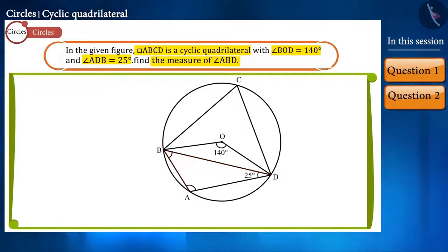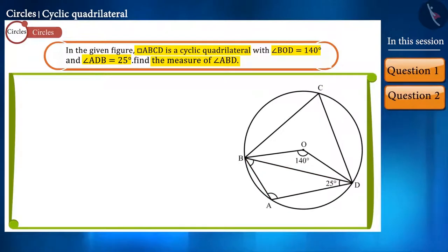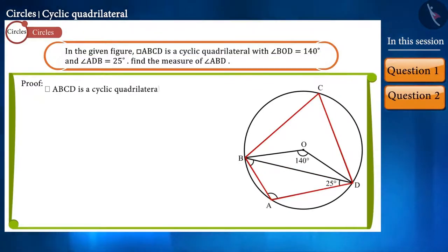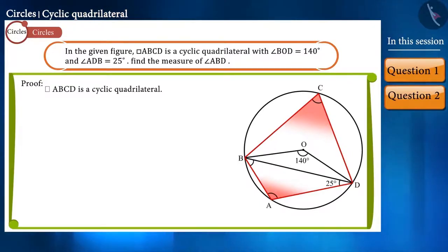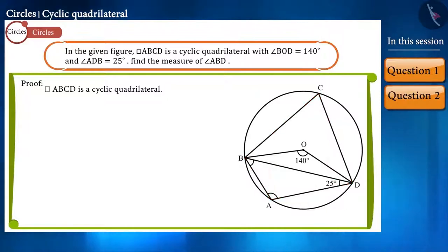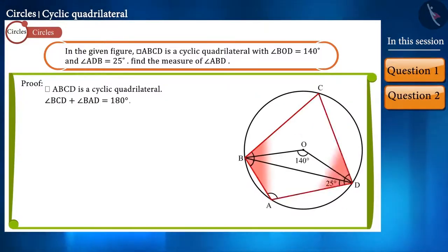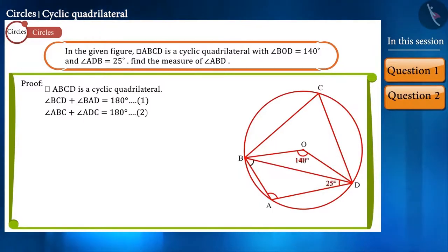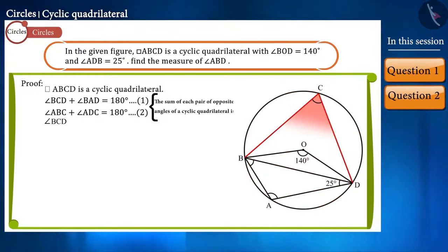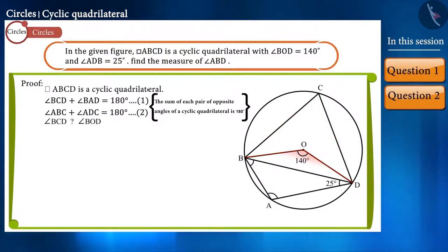Let us first see what is given. ABCD is a cyclic quadrilateral, so the sum of each pair of opposite angles is 180 degrees. By this property we get two equations. Now, looking at the figure, can you determine a relationship between angle BCD and angle BOD? Pause the video and think about the answer.